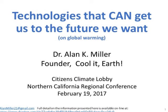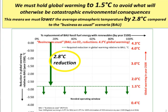Without further ado: we hold these truths to be self-evident - we must hold global warming to 1.5 degrees C to avoid what would otherwise be catastrophic environmental consequences. We can plot this two ways: we need to get global warming down to 1.5°C from where it might otherwise be at 4.3°C, or equivalently, we have to reduce global warming by 2.8°C to get down to what I'm calling the needed operating window.